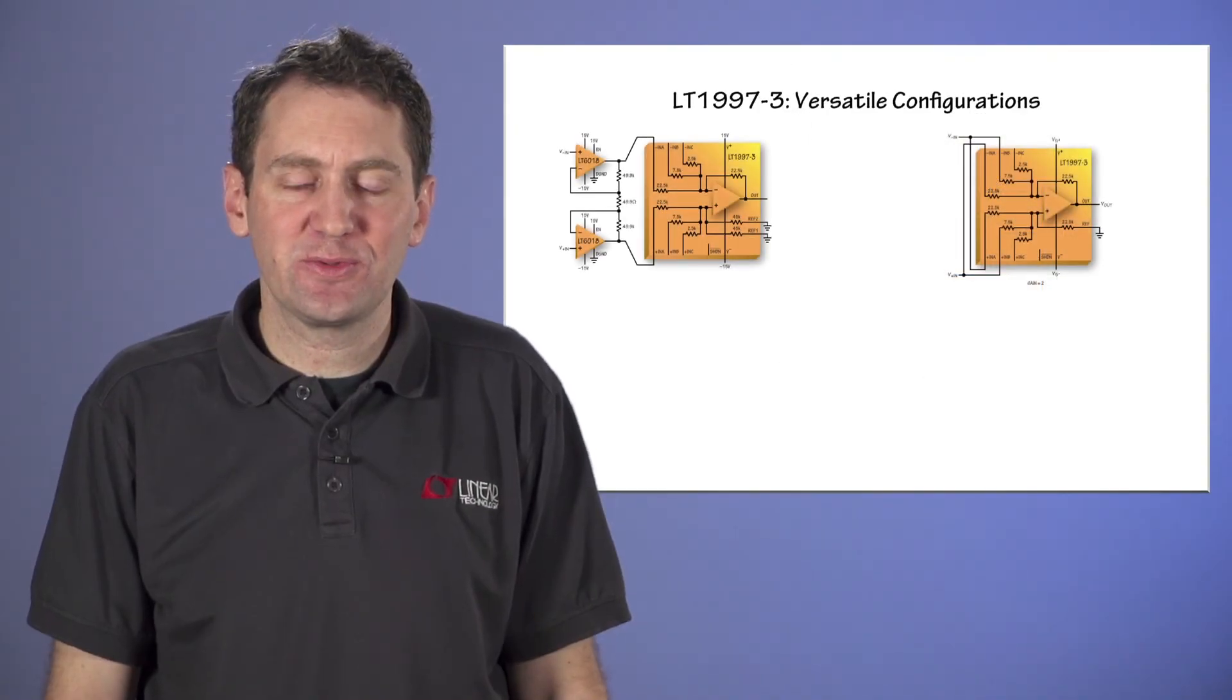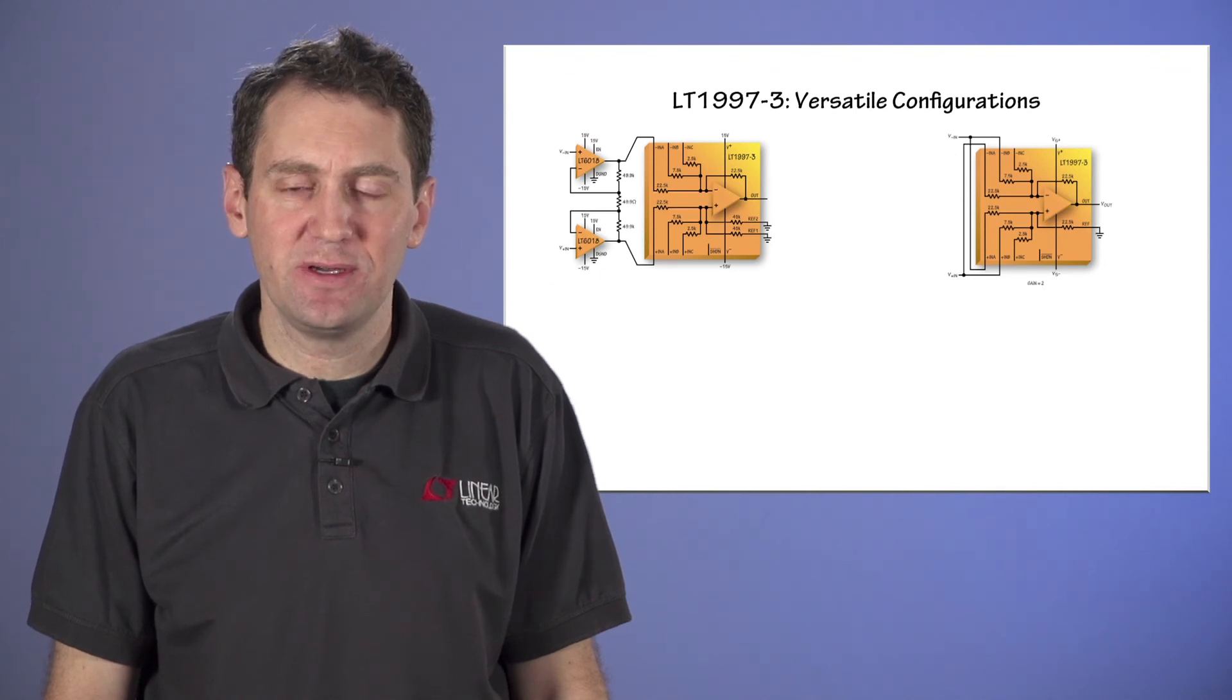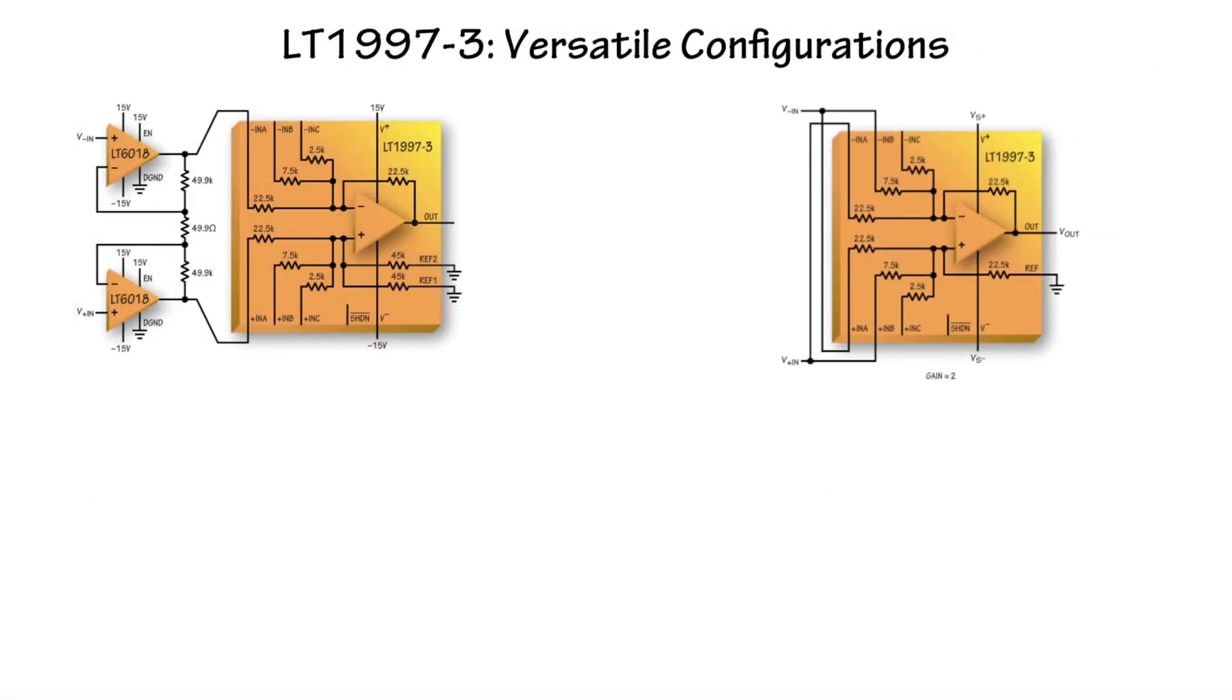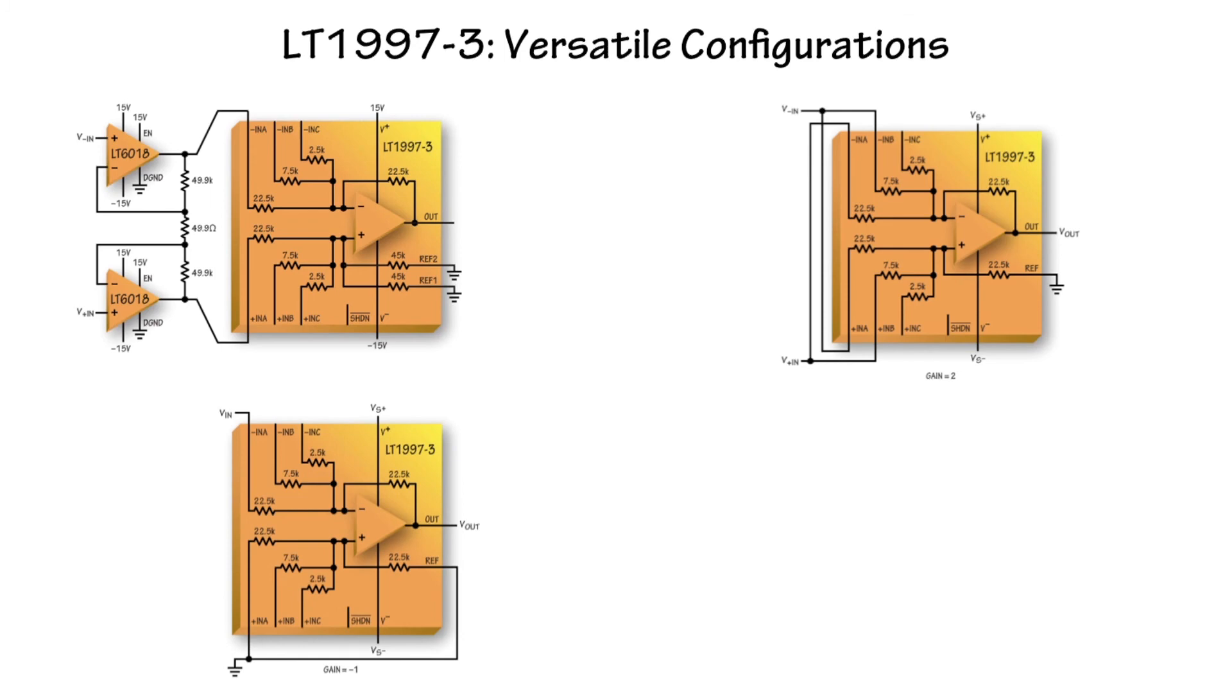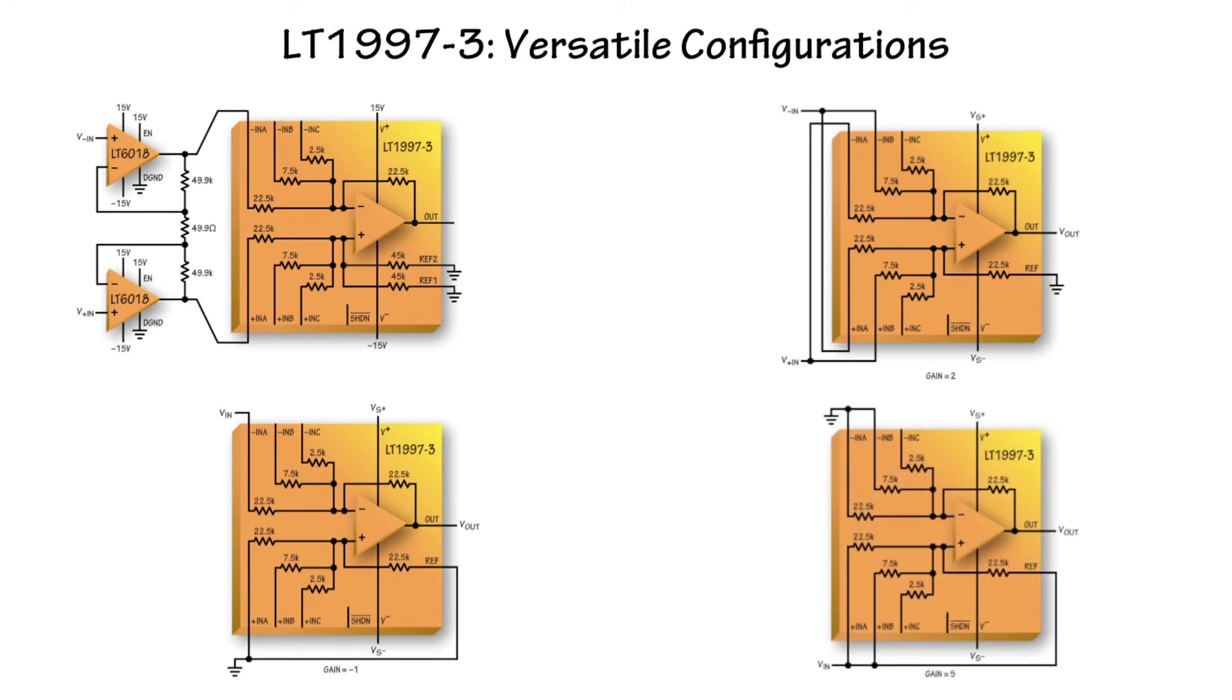Finally, you don't have to use this part in just difference amps. The datasheet shows many examples of how you can use it as a traditional inverting or non-inverting op amp, while still taking advantage of the excellent matching accuracy of the on-chip resistors.